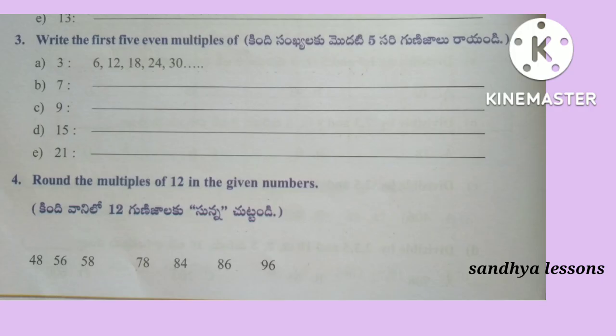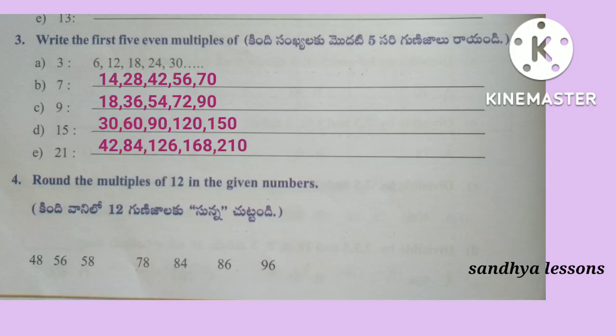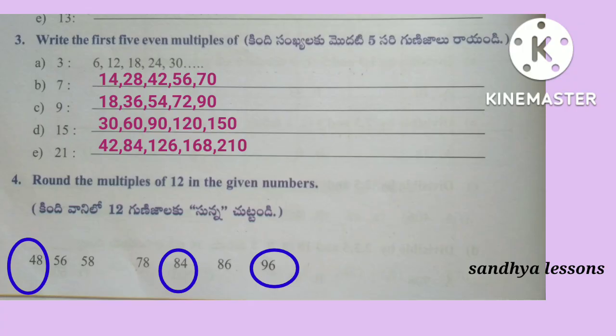Third Roman: Write the first 5 even multiples of the given numbers. First 5 even multiples of 7 are 14, 28, 42, 56, 70. First 5 even multiples of 9 are 18, 36, 54, 72, 90. First 5 even multiples of 15 are 30, 60, 90, 120, 150. First 5 even multiples of 21 are 42, 84, 126, 168, 210. Fourth Roman: Round the multiples of 12 in the given numbers. Multiples of 12 are 48, 84, and 96.